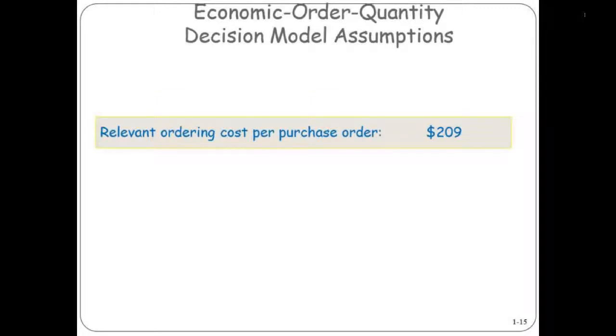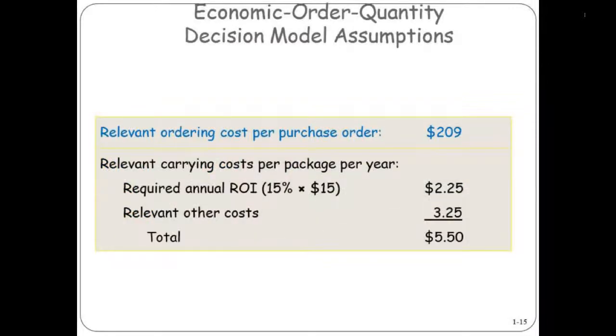For each purchase order, each time they do an order, it costs them $209 per order. Their carrying costs are 15% on each video in inventory, which comes out to $2.25. Other carrying costs, like the cost of space, are $3.25, for a total of $5.50 carrying costs per video in inventory.